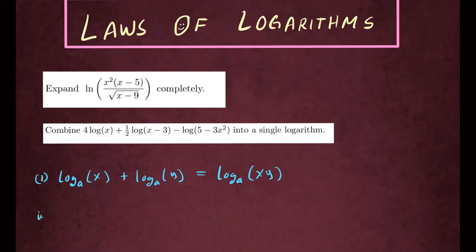Second, if you have log base a of x minus log base a of y, that can be written as log base a of x over y. So if you have a quotient inside a logarithm, you can also write them into differences this way.